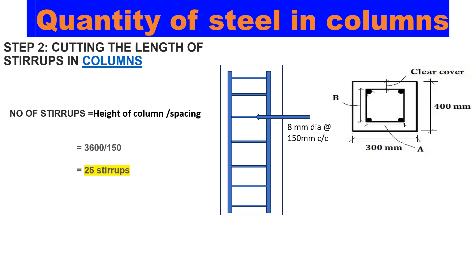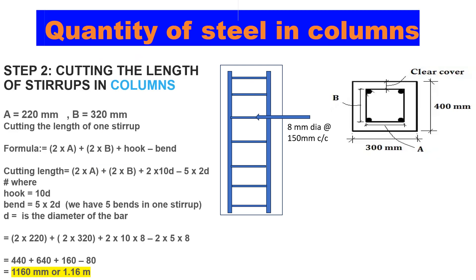Now let's calculate the number of stirrups needed. The height of the column is 3600mm and the spacing is 150 millimeters, so the number of stirrups is 3600 divided by 150, which gives us 25 stirrups. Bear in mind that the spacing is uniform throughout the column.